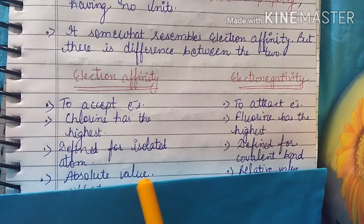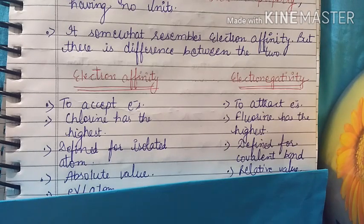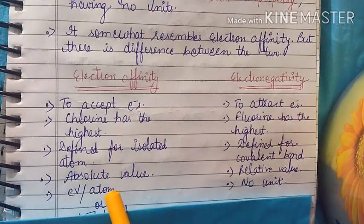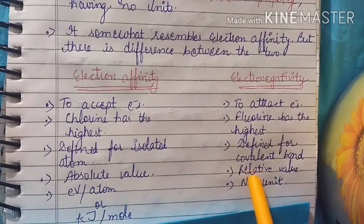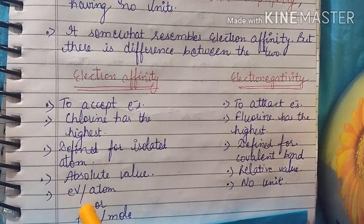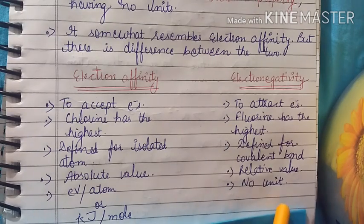It is defined for isolated atoms. Ionization energy, electron gain enthalpy are defined for neutral, isolated, gaseous atoms. But electronegativity has the concept for covalent bond. It is absolute value versus relative value. Electron affinity has units like electron volt per atom or kilojoule per mole, and electronegativity has no unit.